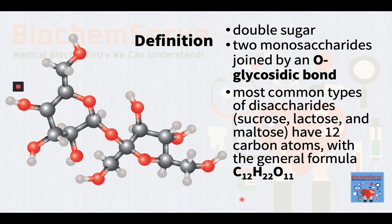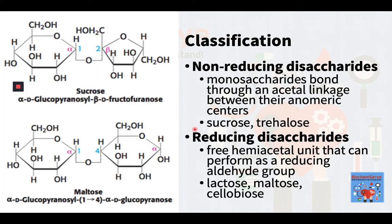Let's now look at the different classifications of disaccharides. There are two functionally different classes. First are the non-reducing disaccharides — disaccharides whose component monosaccharides bond through an acetal linkage between both of their anomeric centers. This results in neither monosaccharide being left with a hemiacetyl unit, or a hydroxyl group attached to the anomeric carbon, that is free to act as a reducing agent. Sucrose and trehalose are examples, as the glycosidic bond is between their respective hemiacetyl carbon atoms. The reduced chemical reactivity of non-reducing sugars may be an advantage where stability and storage is important.